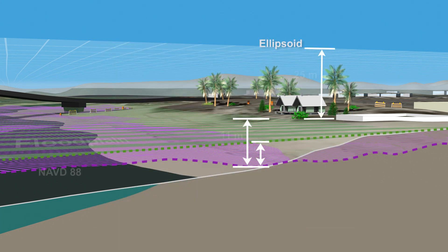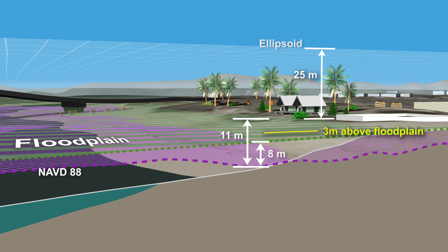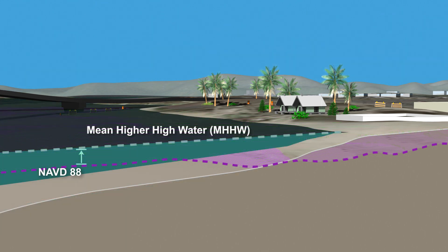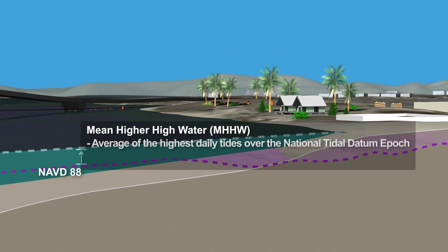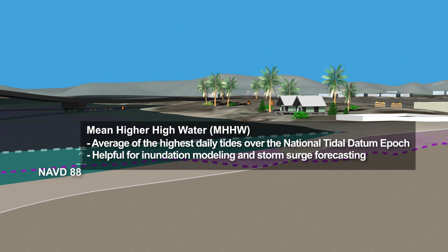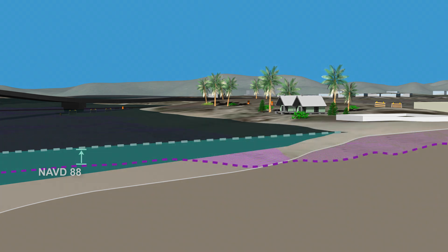Our floodplain map, which is published in NAVD88, has a base flood elevation of 8 meters, so we know this house is built above the high-risk flood zone. VDatum can also transform our 11-meter NAVD88 height to a height referenced to local Mean Higher High Water, or MHHW — the average of the highest daily tides over the national tidal datum epoch. The Mean Higher High Water datum is helpful for inundation modeling and storm surge forecasting.